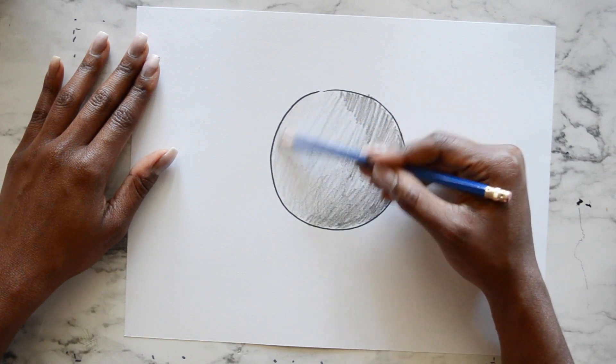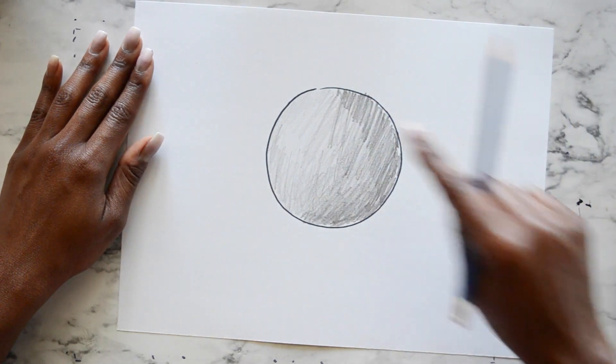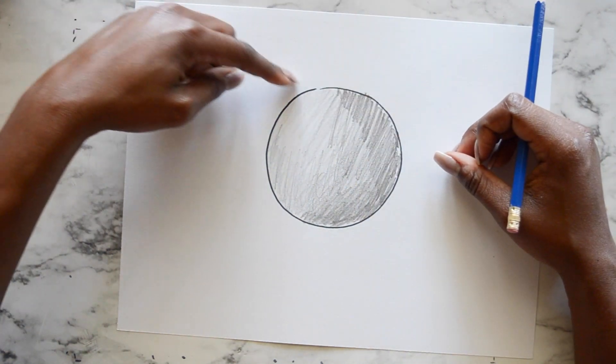The lighter shaded area of the sphere means that a light source, such as sunlight or a flashlight or a room light, is hitting that part of the sphere the most.